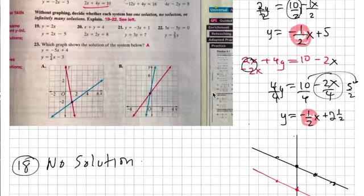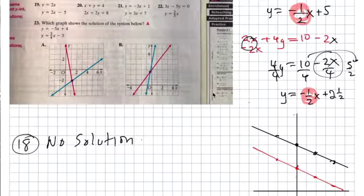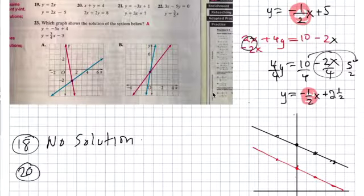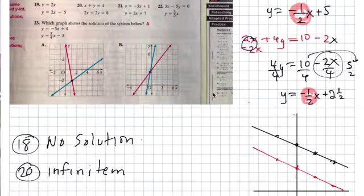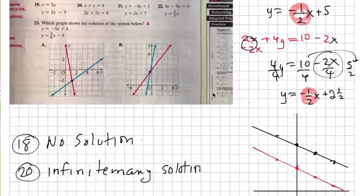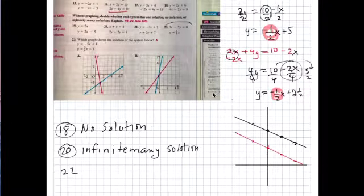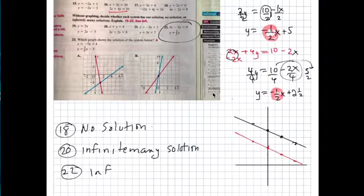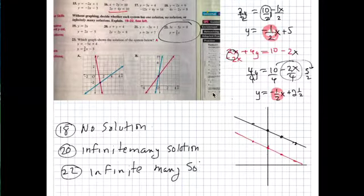Number 20, without graphing, you need to solve that into slope-intercept form. You will find that you'll get the answer of infinitely many solutions on number 20. They're the same fraction, they're the same equation. Number 22, this question is also infinitely many solutions. Solve it for slope-intercept form. I'm going to look for it in your work.